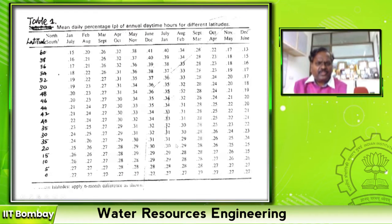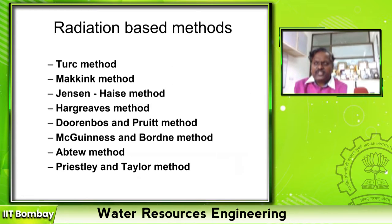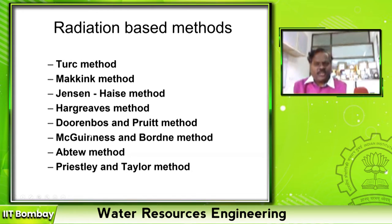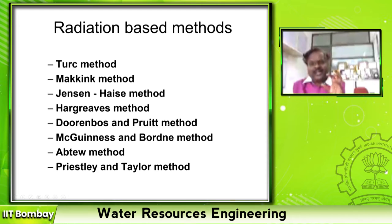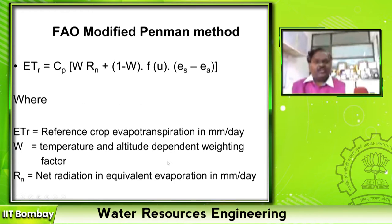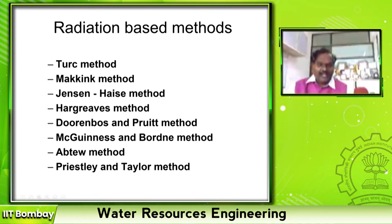This is about the temperature-based method. The second is the radiation-based method, where the major parameter used is radiation values. Out of these radiation-based methods, the Hargreaves method is most commonly used. Doorenbos and Pruitt are the fellows who first developed the FAO book — a very important reference. I request everyone to go to the FAO website and see FAO24 and FAO56, which talk about evapotranspiration estimation.